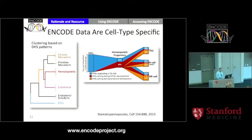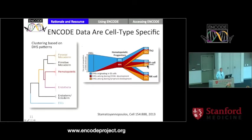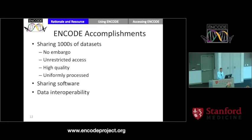ENCODE data are very cell-type specific, which is both an advantage and a drawback. It's a drawback because you need to collect the data in many different cell fates and cell states, unlike DNA sequencing. But it gives you richer information because the answers tell you something about what cell types are involved. If you look at differentiation over time, totipotent cells start off with one set of candidate regulatory elements; some are extinguished over time, new elements appear in progenitor cells, and other elements turn on in fully differentiated cells. These changes in regulatory element signatures tell us about cell fate.